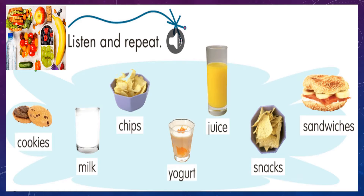Okay, my kids. We are going to listen and repeat one more time. Vamos a escuchar y repetir una vez más. Cookies. Milk. Chips. Yogurt. Juice. Snacks. Sandwiches. Very good, my little kids. Hemos revisado nuestras nuevas palabras. Our new words. We continue.